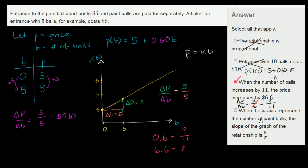Finally: when the x-axis represents the number of paintballs, the slope of the graph is 5/3. Here we did represent the horizontal axis as the number of paintballs, but our slope wasn't 5/3 — it was 3/5. So this last statement is absolutely not right. The only statement that applies is that the price increases by $6.60 when the number of balls increases by 11.